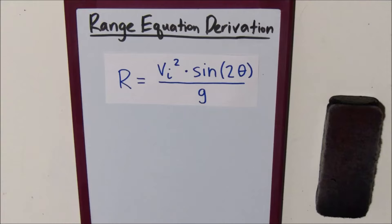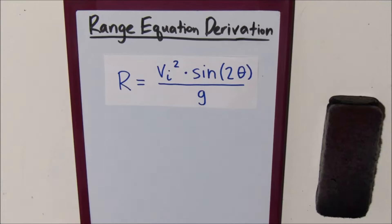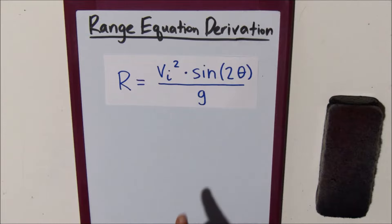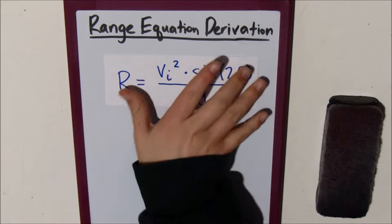Alright, so today we're going to take the range equation and I'm going to show you how you can derive it from the horizontal and vertical components of the motion equations. We know that range, or delta x, equals v initial squared times sine 2 theta over gravity. But how do you get this equation? I'm going to show you that.